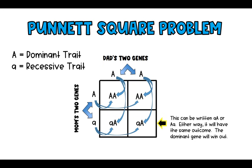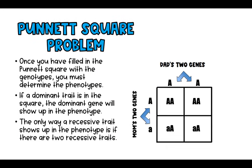Once we fill in the Punnett square with the genotypes, we determine the phenotypes — what would the child actually look like? If a dominant trait is in the square, the dominant gene will show up in the phenotype. The only way a recessive trait shows up in the phenotype is if there are two recessive traits in that square.